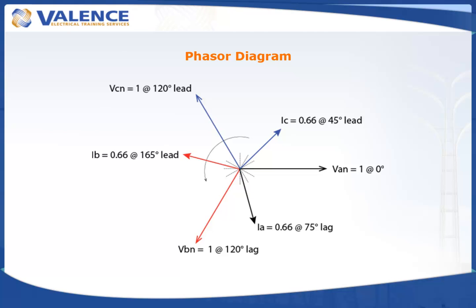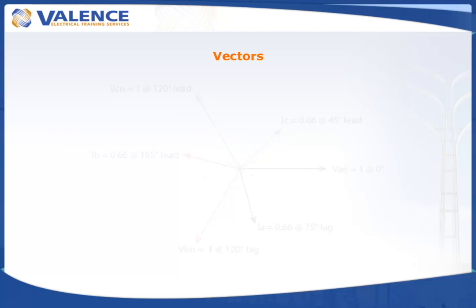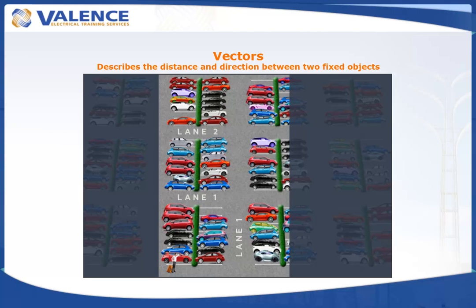Some people use the term vectors to describe phasors, but you should never confuse the two terms in front of an electrical purist. A vector describes the distance and direction between two fixed objects, like the directions you get from your GPS.